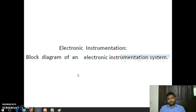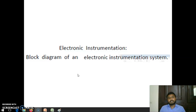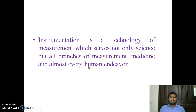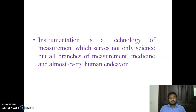Electronic instrumentation is actually the application of electronics in the branch of science that is instrumentation, which is a branch of engineering. Before going into electronic instrumentation, it is better to know what instrumentation is. Instrumentation is a technology of measurement which serves not only science but all branches — medicine and almost every human endeavor. Instrumentation deals with measuring methods.